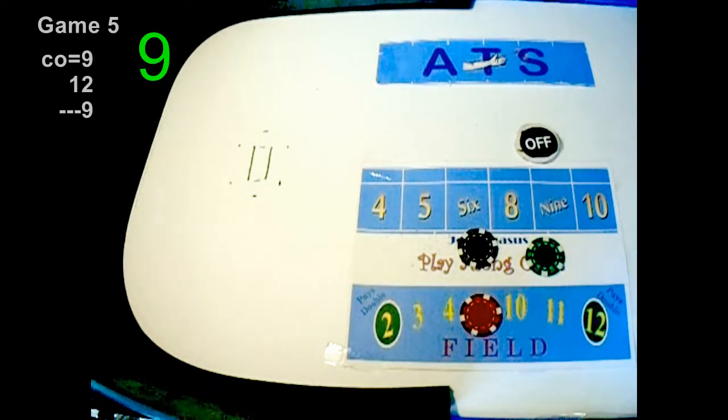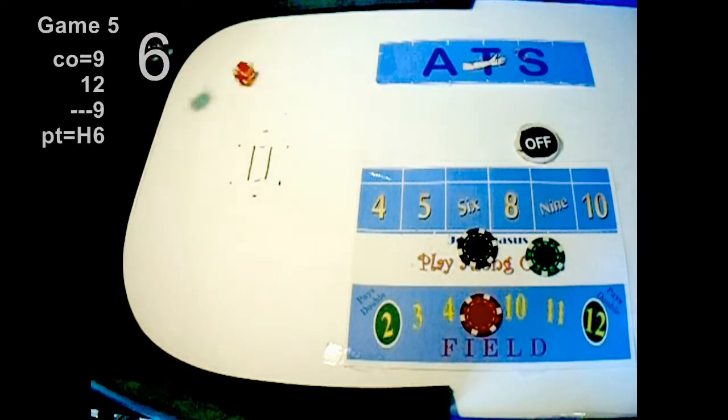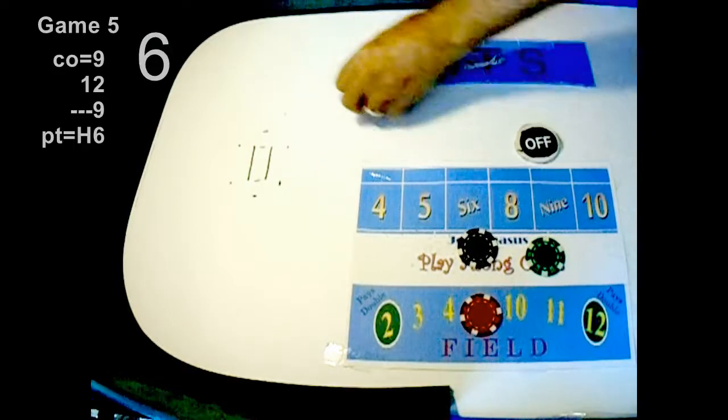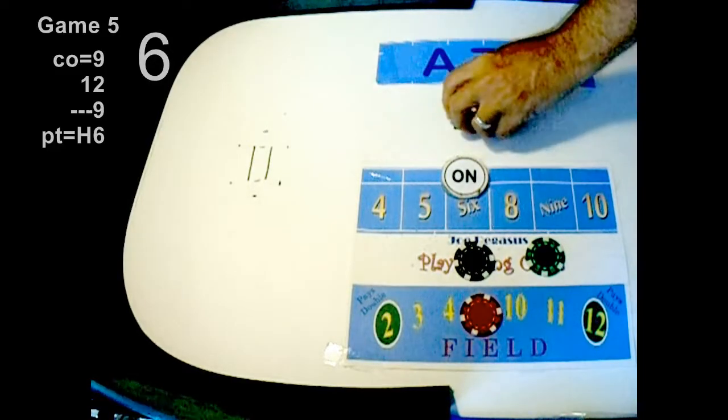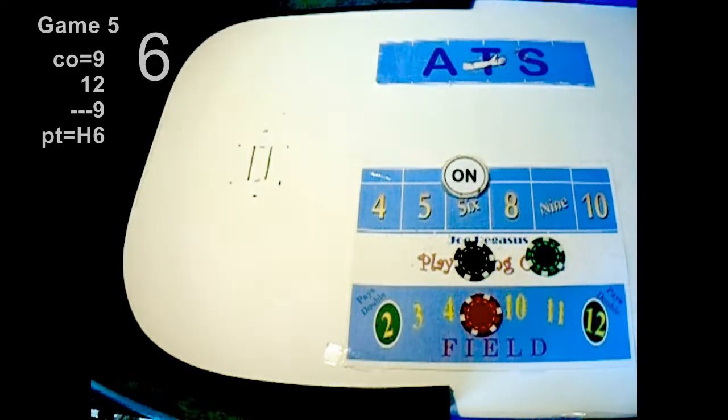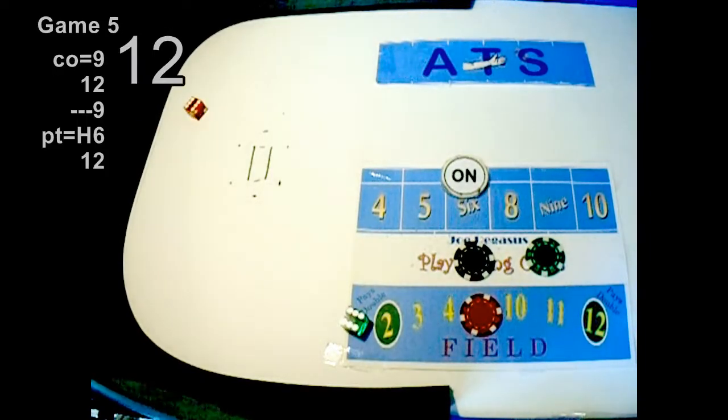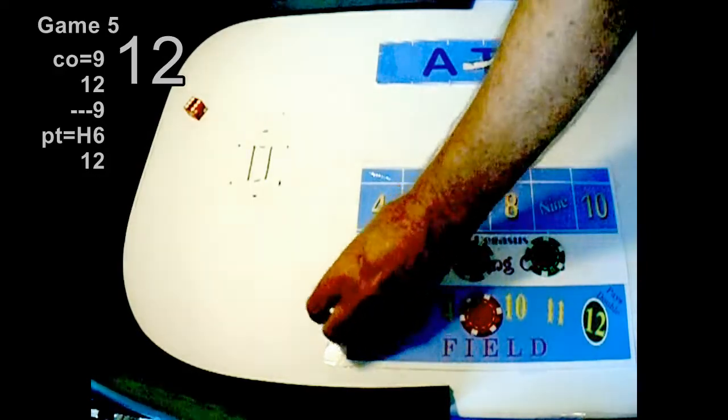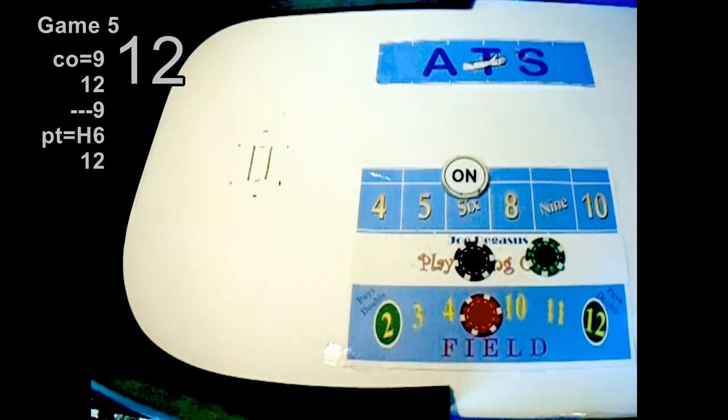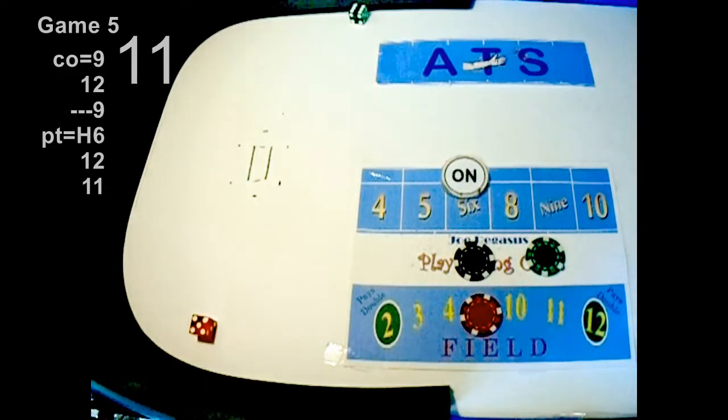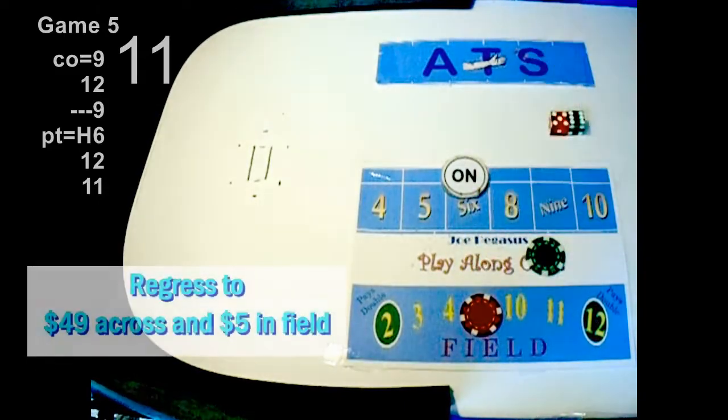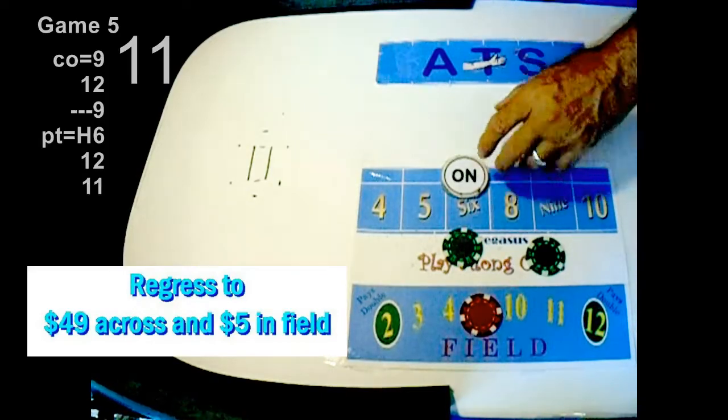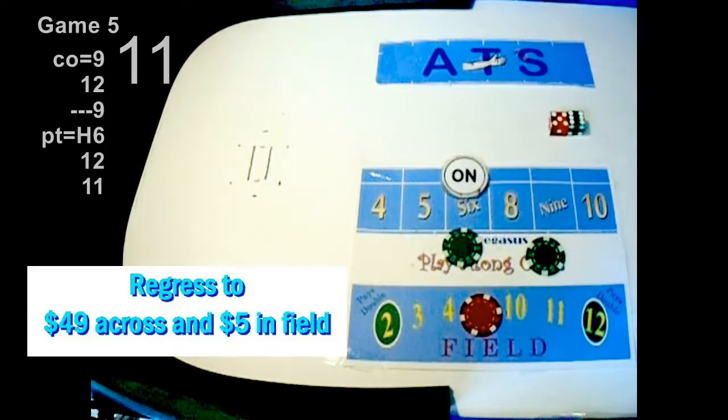Sloppy but I'm going to take it, a hard six. This set especially, hard sixes come up a lot with this set. Boxcars. Any of this set likes boxcars I guess. Oh, eleven, yo eleven, six five, and we're going to regress. 49 across, five in the field, 11.